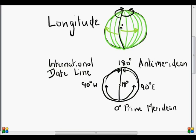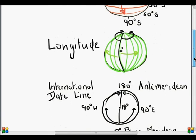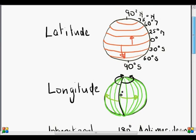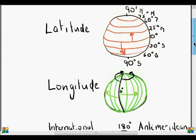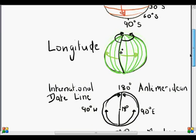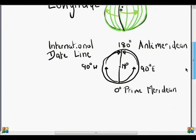So there we have our two systems, latitude and longitude. Latitude goes from 90 degrees north through 0 to 90 degrees south. And longitude goes from 0 to 180 degrees east and west.